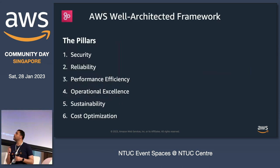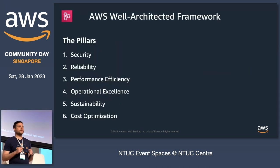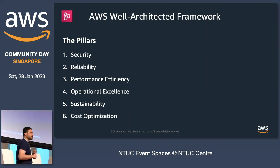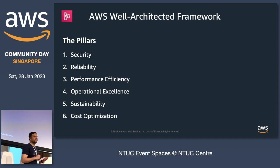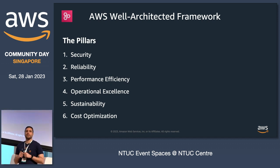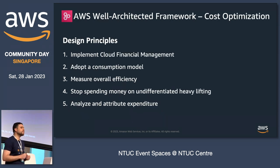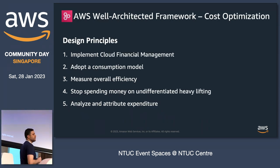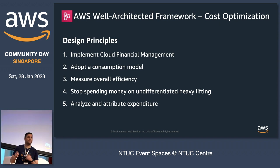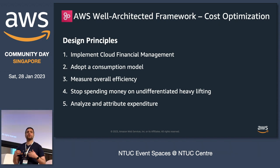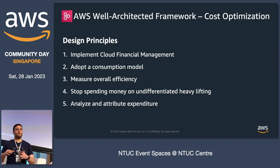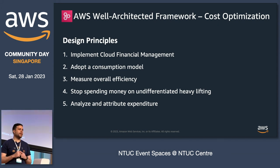The Well-Architected Framework is built around six pillars: security, operational excellence, performance efficiency, sustainability, reliability, and the pillar we're going to talk about today — cost optimization. The cost optimization pillar has five design principles. If you follow these design principles and manage to implement their best practices, you can eventually be cost optimized.